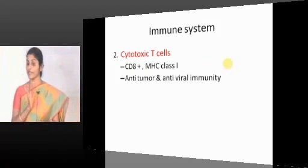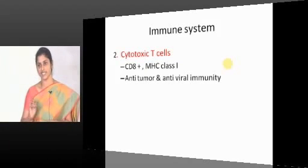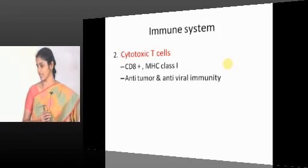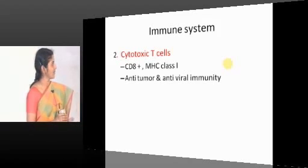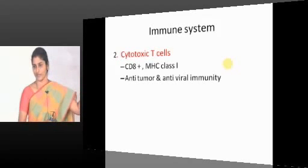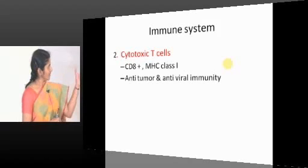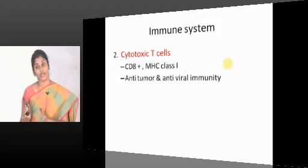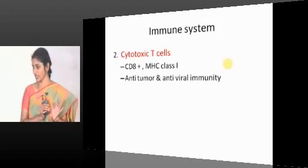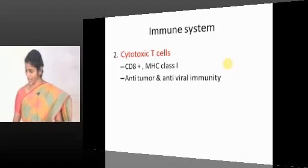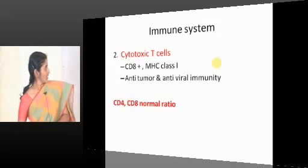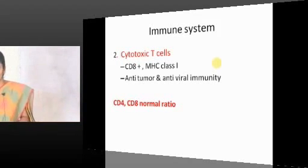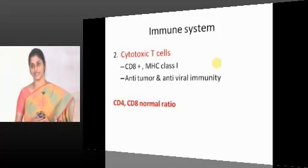Cytotoxic T-cells carry the CD8 marker — as opposed to helper T-cells which carry CD4 — and they basically provide anti-tumor and anti-viral immunity. Natural killer cells, from the innate immunity pathway, share this function of anti-tumor and anti-viral immunity. The CD4:CD8 ratio is a must-know point. What is the ratio, and where does it get reversed? In HIV, it gets reversed.